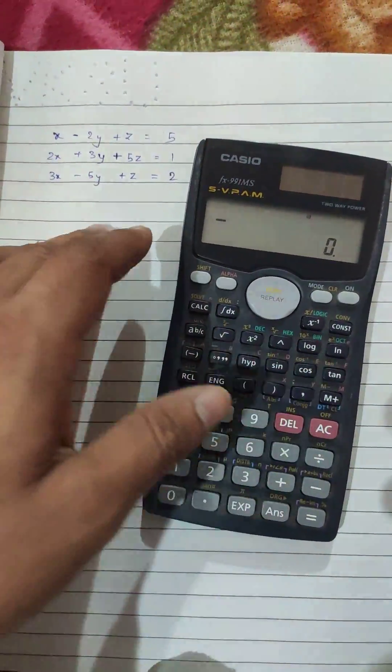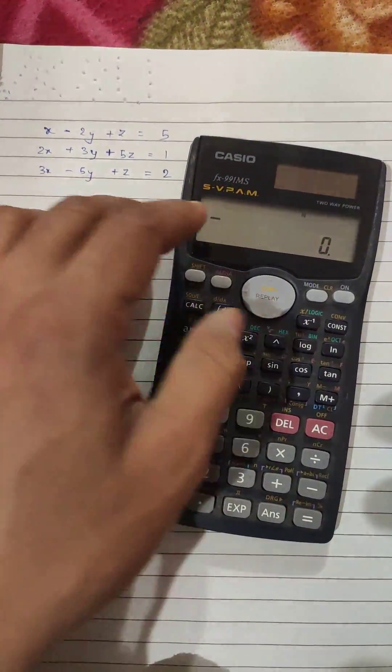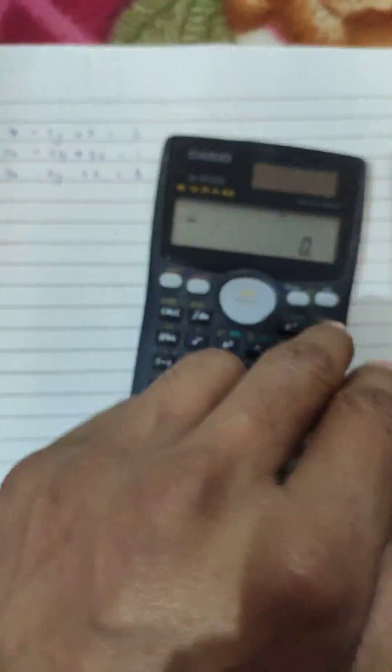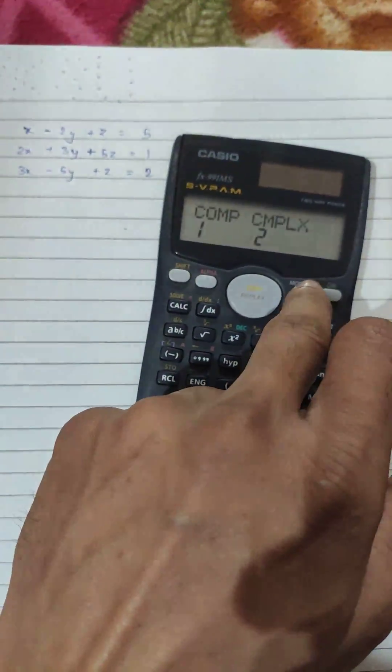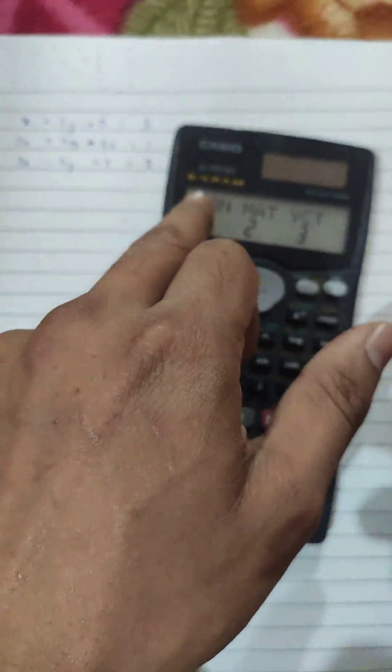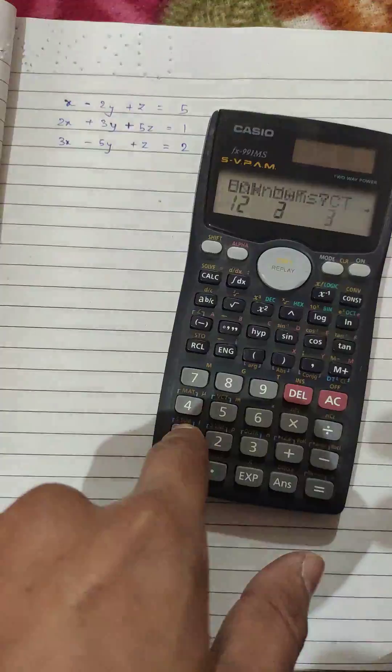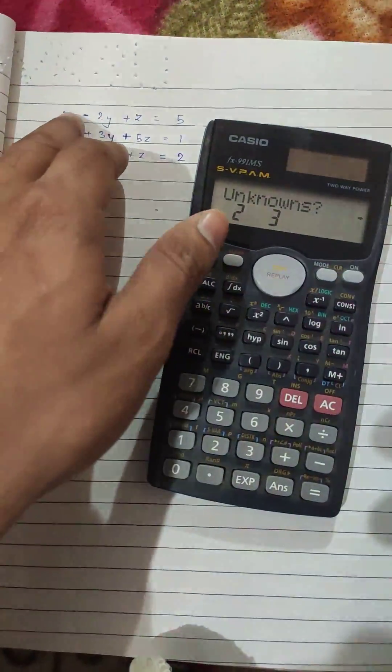So this is how you solve equation in three variables on your FX-991MS calculator. We press the mode, mode, and again mode for equation. Press plus one. There are three variables X, Y, and Z, so we have three unknowns. Press three.